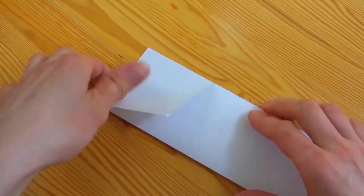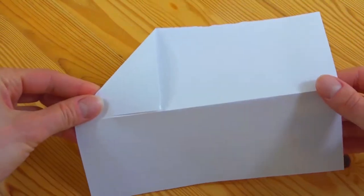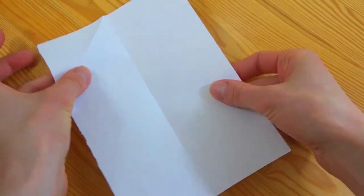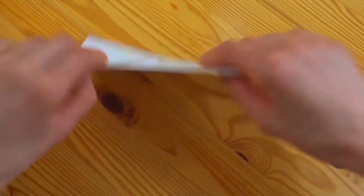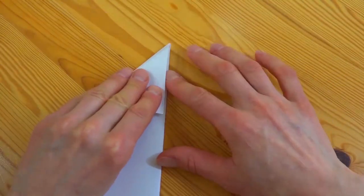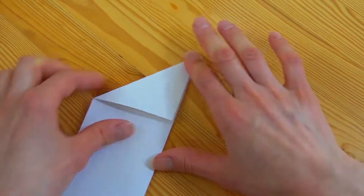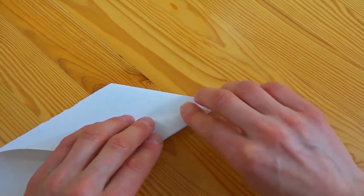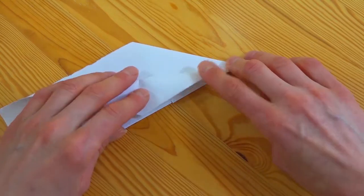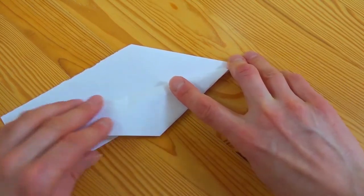As you see we've already started to make the plane. We will need a sheet of paper for this. Fold it down like this and like that. Turn it over, fold down and once again like that and from the other side.